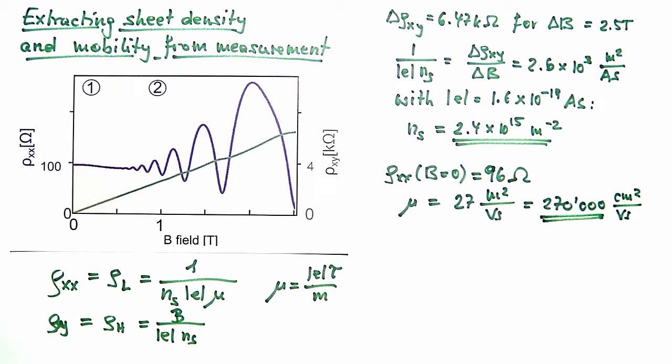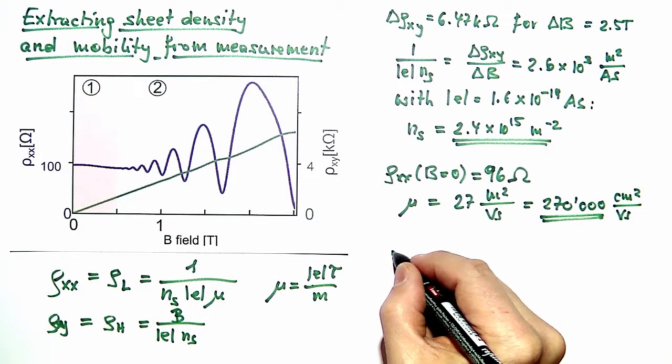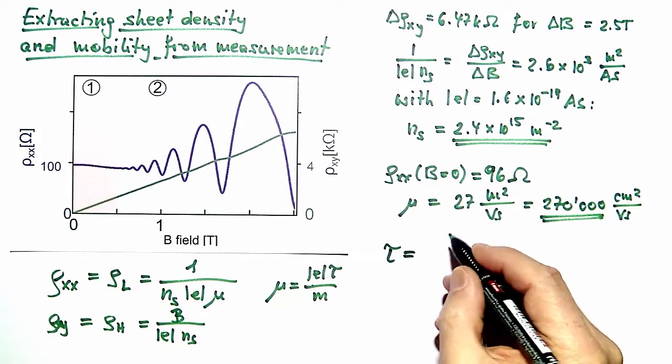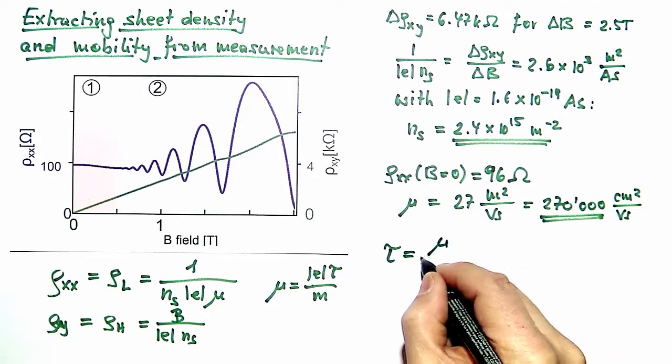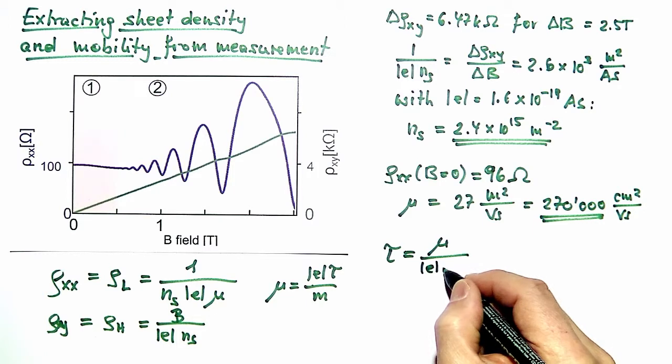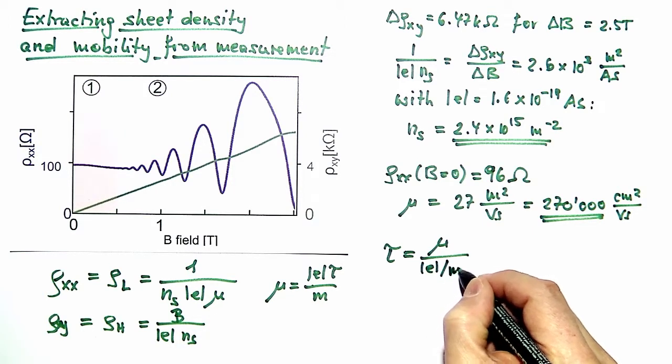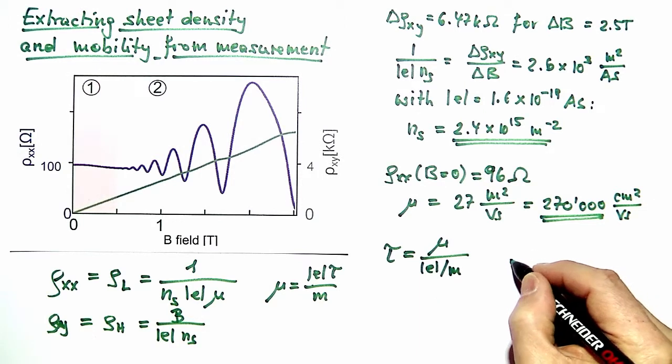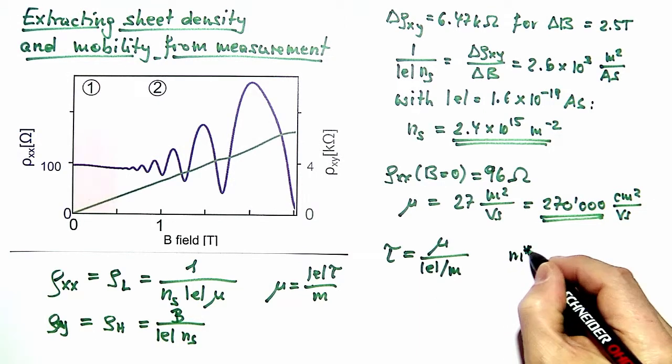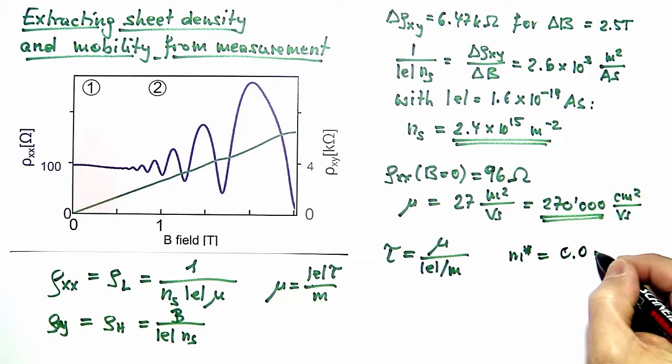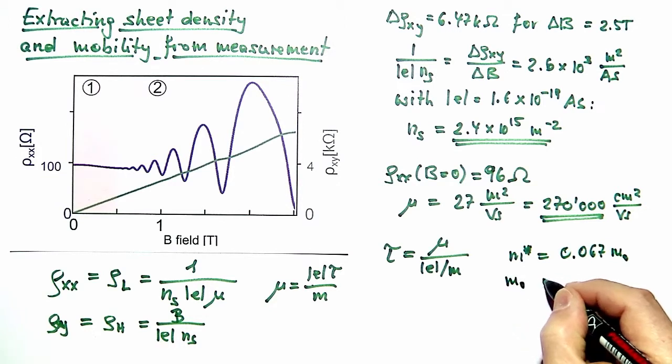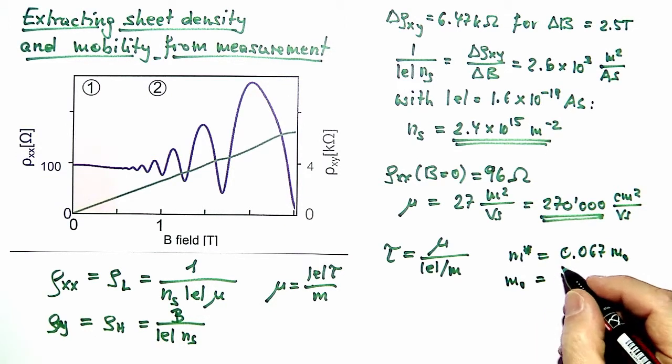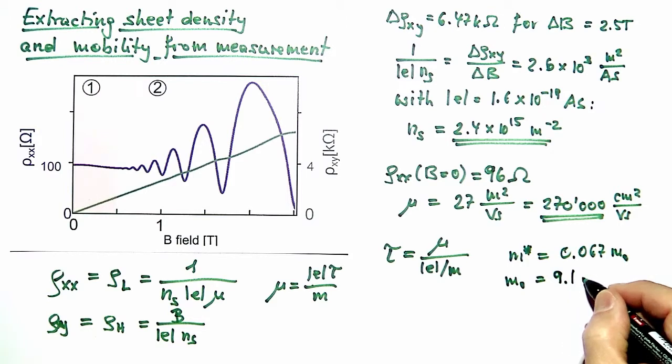Now knowing the mobility, we can using this expression easily work out the scattering time. So tau would be given by the mobility mu divided by the elementary charge by effective mass ratio. The effective mass for gallium arsenide is given to be 0.067 times the free electron mass, and the free electron mass can be looked up to be 9.1 times 10^-31 kilograms.